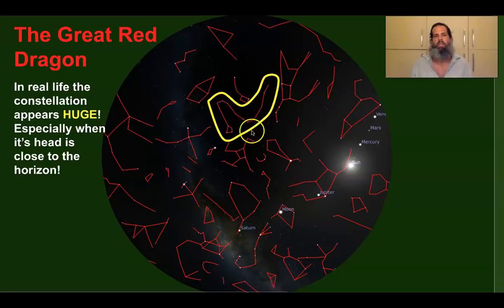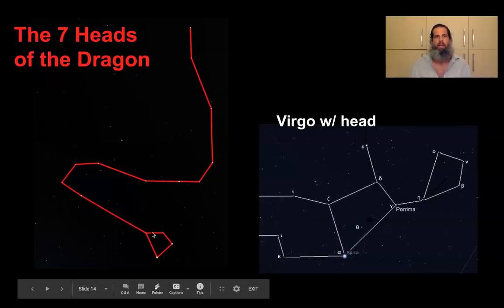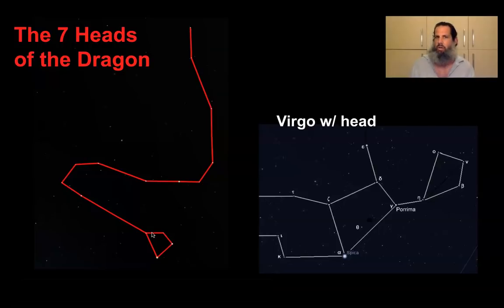Here outlined in yellow is the great red dragon. You might be saying this doesn't look so great, but actually in real life, the constellation appears huge. It especially appears huge when its head is close to the horizon below the north pole star, Polaris. So, the seven heads of the dragon, I'm going to possibly identify this sign, but I can definitely nail down the two other parts. Here's a picture of Virgo with her head, and above her head was a crown of 12 stars. Here is the dragon and here is its head.